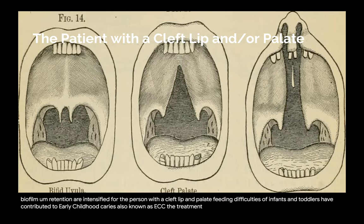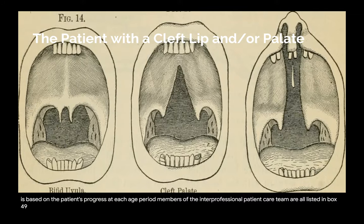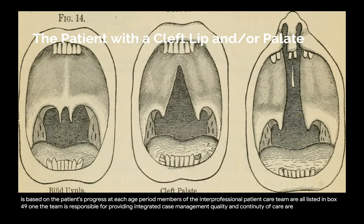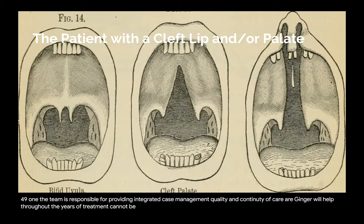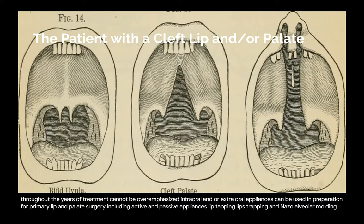The treatment is coordinated by a team of specialists and is based on the patient's progress at each age period. Members of the interprofessional patient care team are listed in box 49-1. The team is responsible for providing integrated case management. Quality and continuity of care are essential. Need for attention to gingival health throughout the years of treatment cannot be overemphasized. Intraoral and/or extraoral appliances can be used in preparation for primary lip and palate surgery, including active and passive appliances, lip taping, lip strapping, and nasal alveolar molding technique.